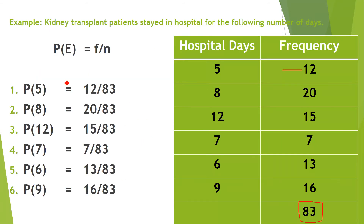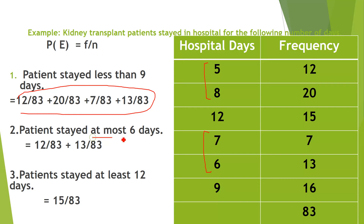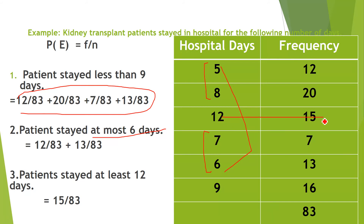For patient stayed at most 6 days, you add the frequencies for 5 and 6 days: 12/83 + 13/83, then simplify. For patient stayed at least 12 days, there were 15 patients, so the probability is 15 divided by 83.